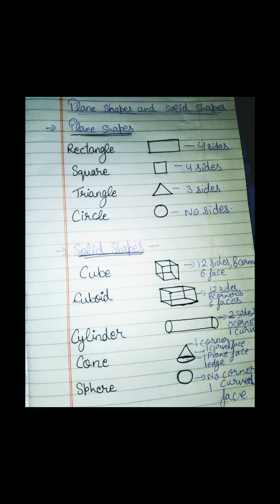Now let's see the simple rectangle. Generally if we see a simple rectangle it is a plane shape. Square is a plane shape. Triangle is a plane shape. A circle is a plane shape. A rectangle has four sides and it is a plane shape. A square also has four sides.